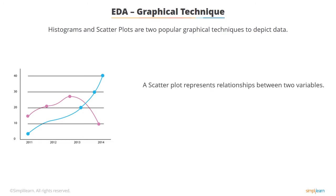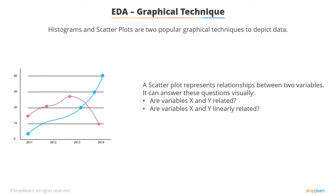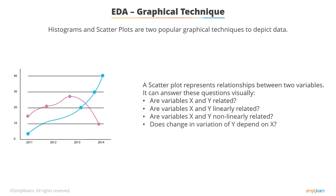Another popular technique is scatterplot. A scatterplot represents relationships between two variables. A scatterplot can answer these questions visually: Are variables X and Y related? Are variables X and Y linearly related? Are variables X and Y non-linearly related? Does change in variation of Y depend on X? Are there outliers?